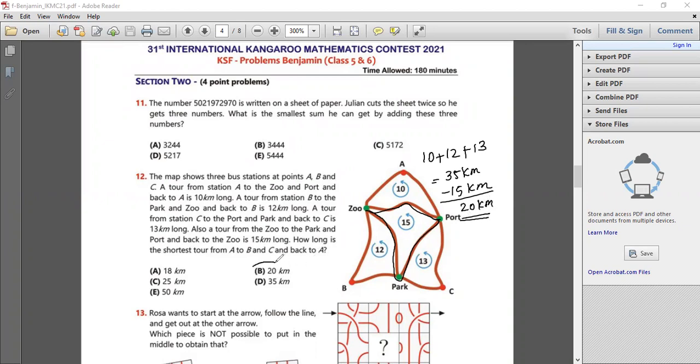So my answer is B, option number B, 20 kilometers. This is the shortest tour from A to B to C and back to A. I hope you enjoyed this video. Thank you.